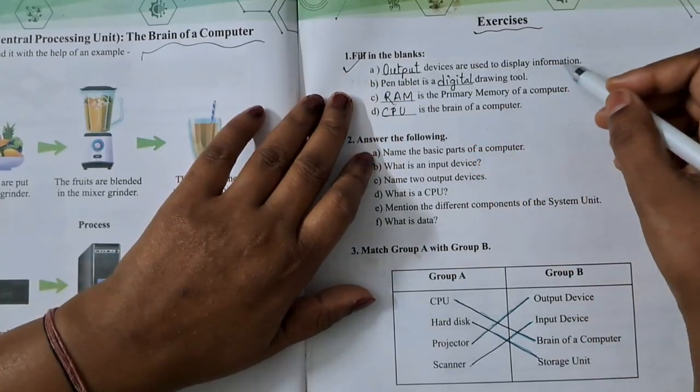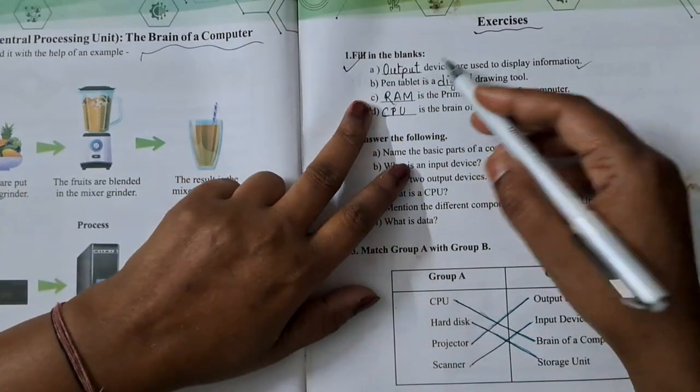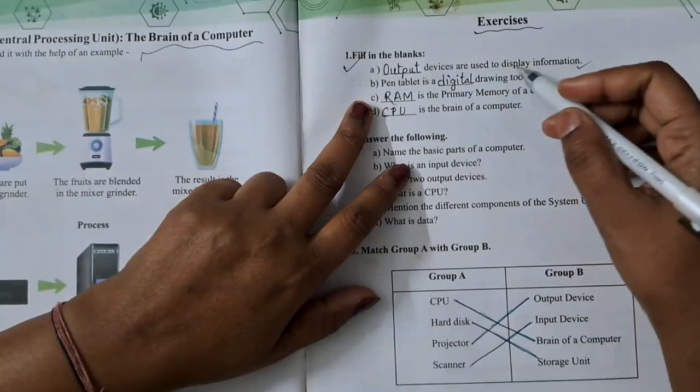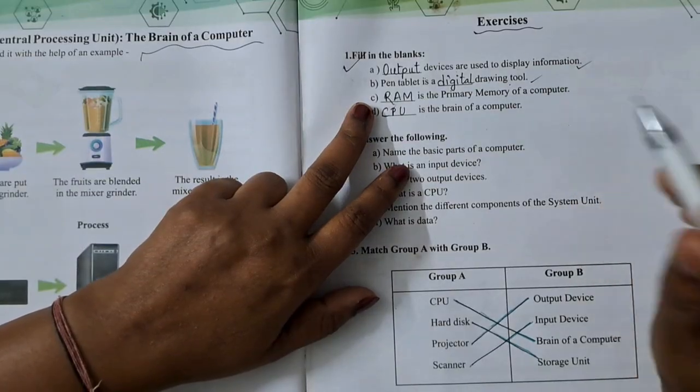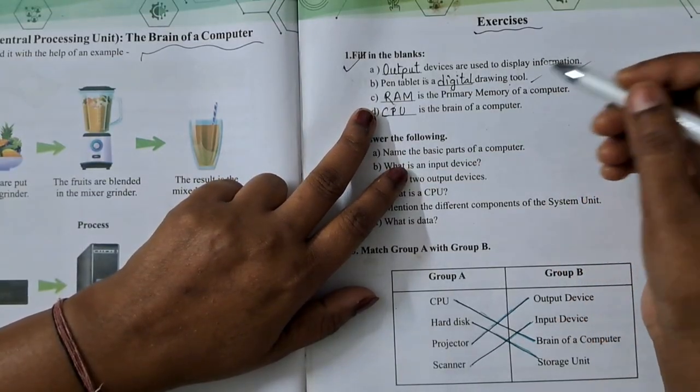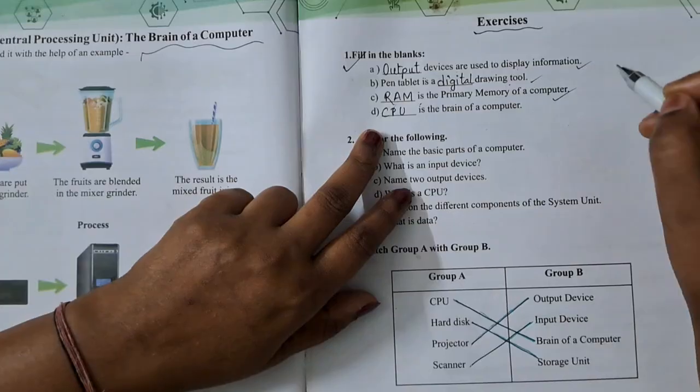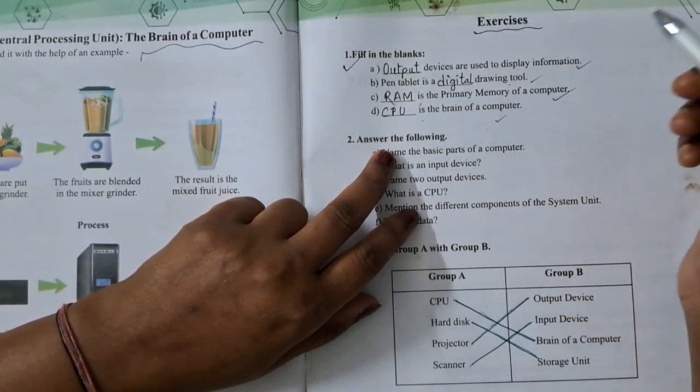Output devices are used to display information. Pen Tablet is a digital drawing tool. RAM is a primary memory of a computer. CPU is a brain of a computer. This is all our fill in the blanks.